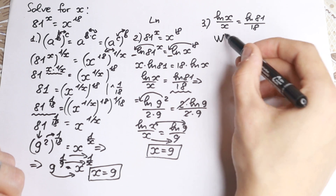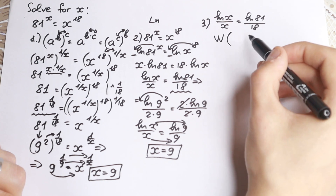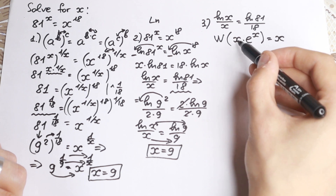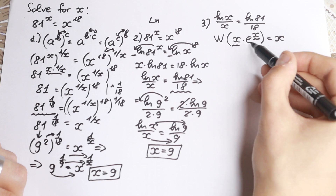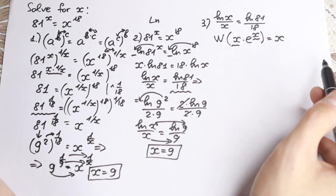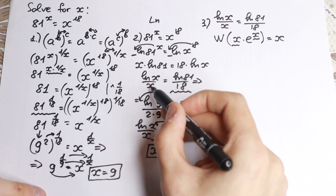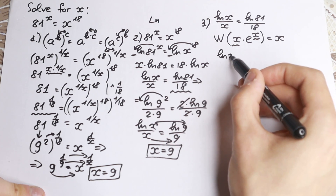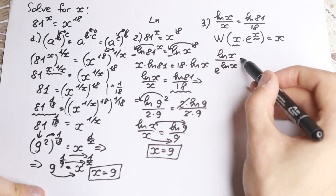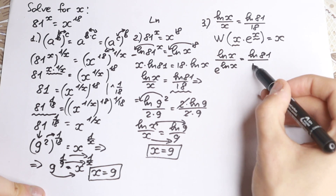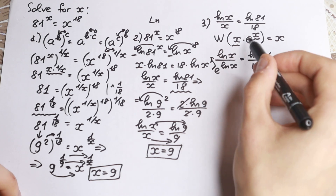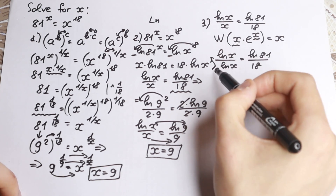We need to remember the Lambert W function: W(x times e to the x) equals x. So if we have the same expression in both places, applying W gives us x. Now I want to write x as e to the power natural log x. So natural log x, times e to the power natural log x, equals the constant natural log 81 over 18. Let's bring the e to our numerator, since Lambert W function doesn't work with denominators.